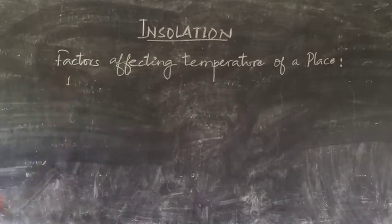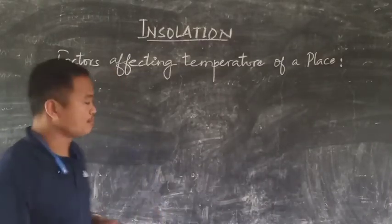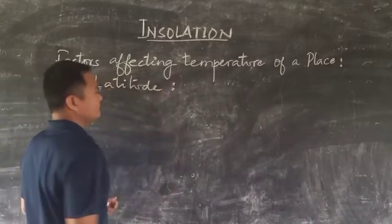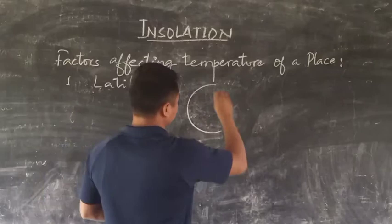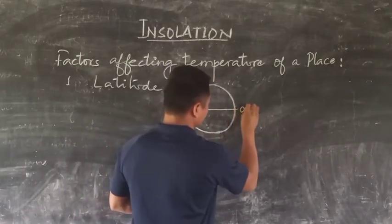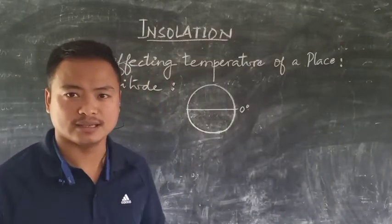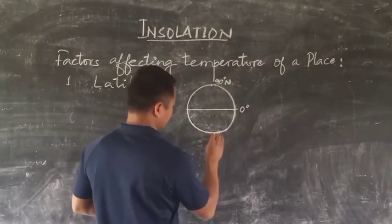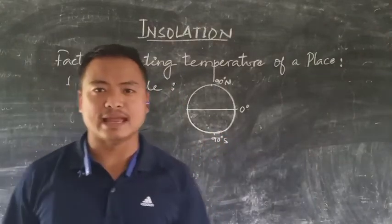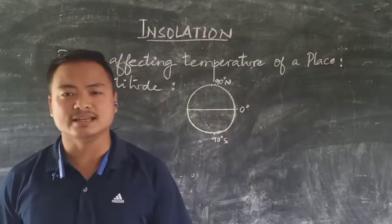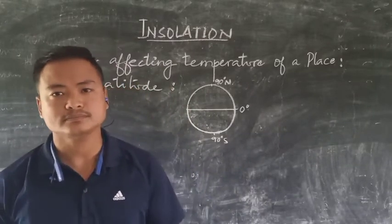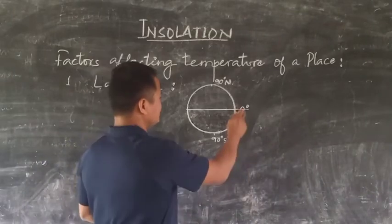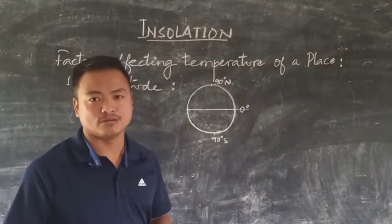The first factor that determines the temperature is latitude. When we talk about latitude, the Earth is divided into two equal halves with a line of latitude at zero degree, which is the equator. It goes until 90 degrees in the north and 90 degrees in the south. The latitudes from zero to 90 north and zero to 90 south do not receive the same amount of heat, that is insolation.